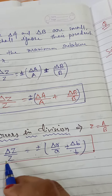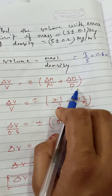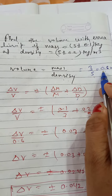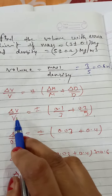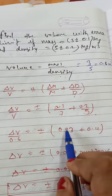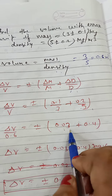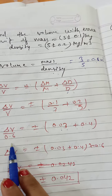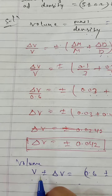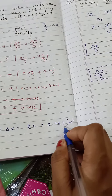Delta-b is delta-d and b is d — that is density. Now we calculate the volume: volume equals mass divided by density equals 3 divided by 5, giving 0.6 meter cube. Putting values into the error formula: delta-v upon 0.6 equals plus minus delta-m upon m plus minus delta-d upon d, which is 0.1 upon 3 plus 0.2 upon 5. After calculation we get 0.03 plus 0.04. After cross multiplication we get plus minus 0.042 meter cube. So volume with error is v plus minus delta-v equals 0.6 plus minus 0.042 meter cube.